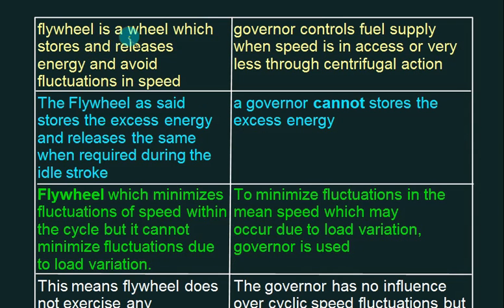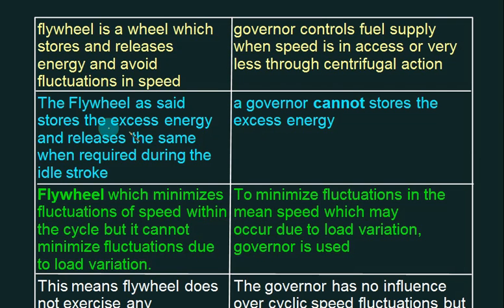A flywheel is a wheel which stores and releases energy, providing a buffer against fluctuation in speed. The flywheel stores excess energy and releases it when required during idle strokes. A governor cannot store energy — that is the main difference. Governors just control the amount of fuel or working fluid supplied to the prime mover, whereas the flywheel stores energy in the form of kinetic energy.